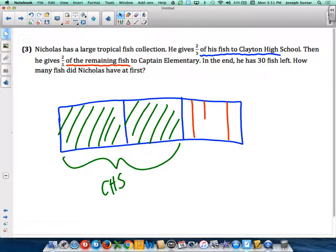We draw that by drawing four lines and now we have fifths there and he gives away two-fifths. So we'll shade out two bars and this is what he gives away to Captain.